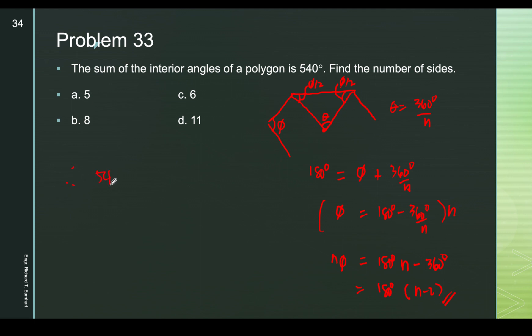If we have 540 degrees as the sum, then 180(n − 2) = 540. Solving: n − 2 = 3, so n = 5. We have a pentagon. The sum of interior angles of a regular pentagon is 540 degrees.